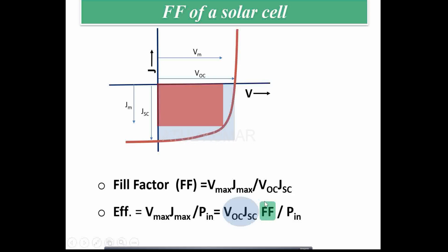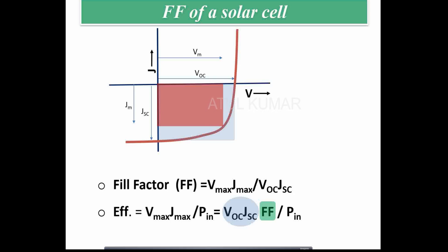Physically, fill factor is a term telling us how good our solar cell is in terms of extracting voltage and current. Some recombination mechanisms only affect voltage, some only affect current — for example, absorption majorly impacts current. Fill factor defines those recombination mechanisms that impact both voltage and current combined.